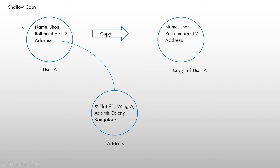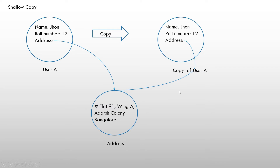If you go with the shallow copy concept, the address object copy will not get created. Instead, in the copy of user A, the address will point to the same address object as the original user A. So any change made in the address object of user A will get reflected into the copy of user A, and vice versa. This is certainly not what we want when creating a copy.